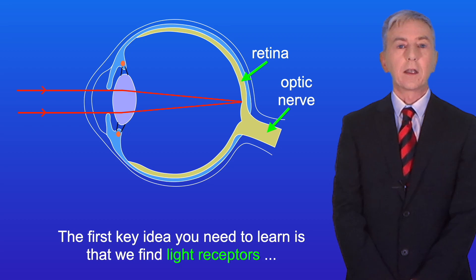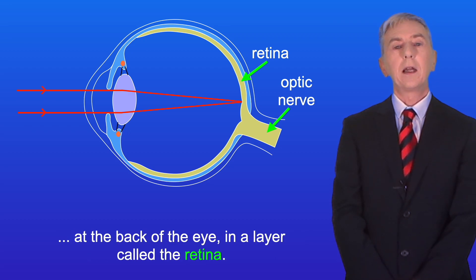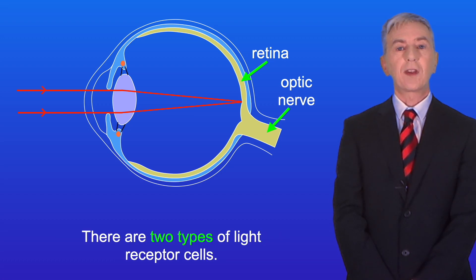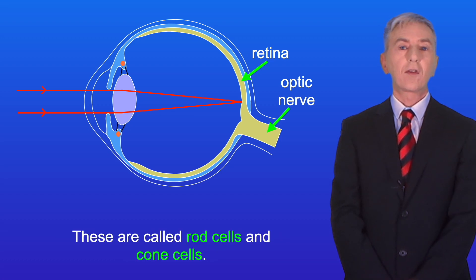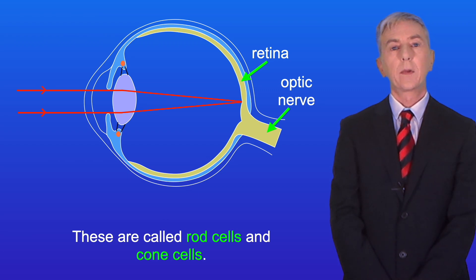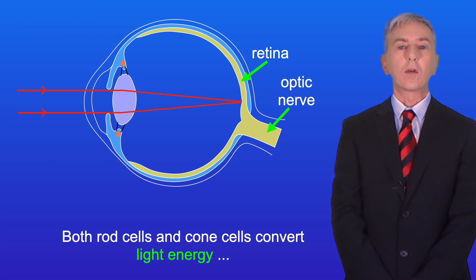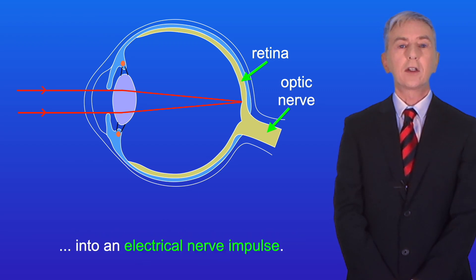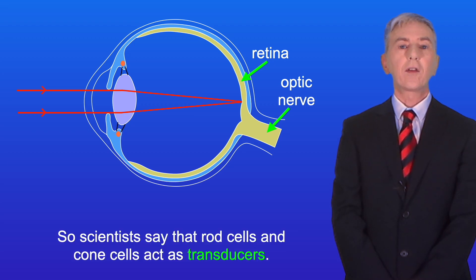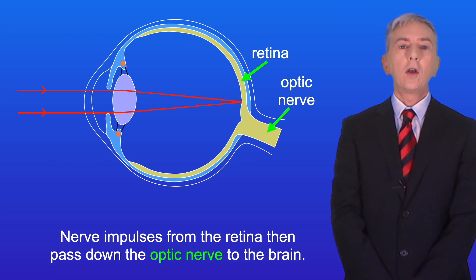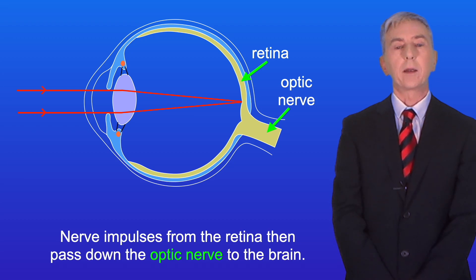The first key idea you need to learn is that we find light receptors at the back of the eye in a layer called the retina. There are two types of light receptor cells: rod cells and cone cells. Both rod cells and cone cells convert light energy into an electrical nerve impulse, so scientists say that rod cells and cone cells act as transducers. Nerve impulses from the retina then pass down the optic nerve to the brain.